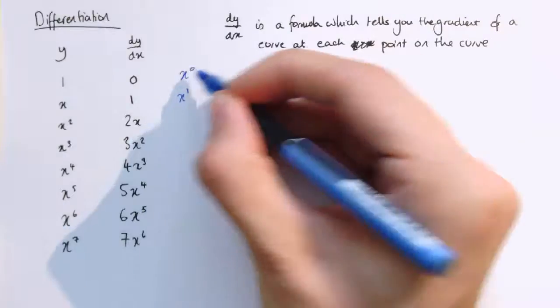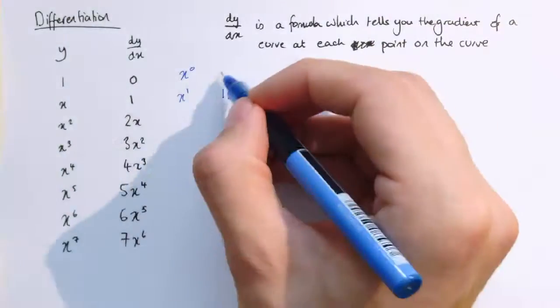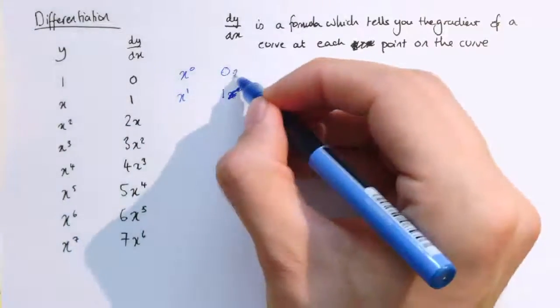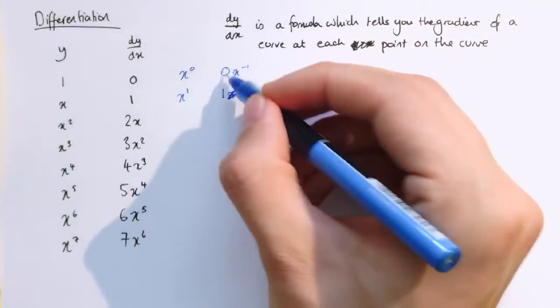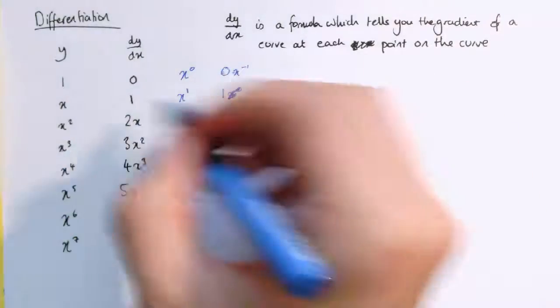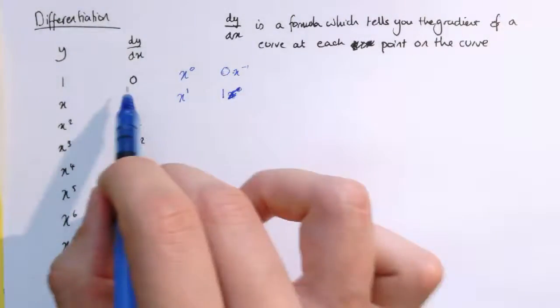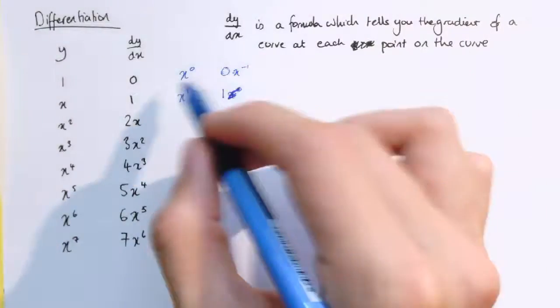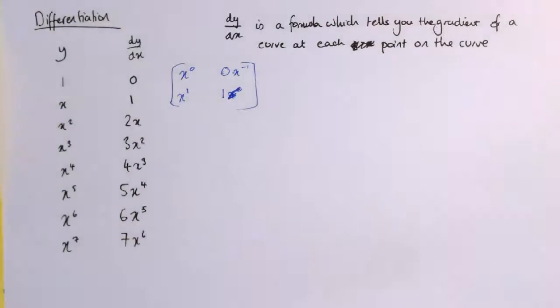Similarly, here if we've got x to the 0, well, if I pull the 0 down in front, I'm just going to get 0 times, well, you might say 0 times x to the minus 1, but that's just going to be 0, because 0 is nothing to get 0. So although we wouldn't usually use this rule for these ones, because they're easy cases, it's nice to know that they do fit in. There's nothing special about them in that sense. It's the same rule.